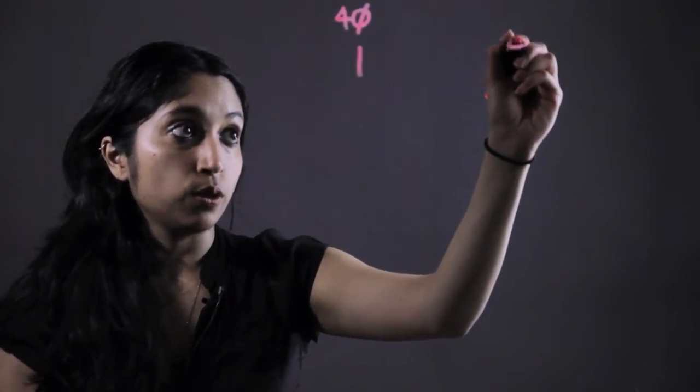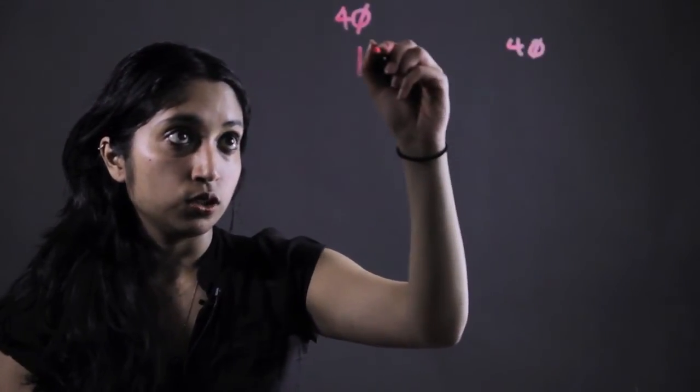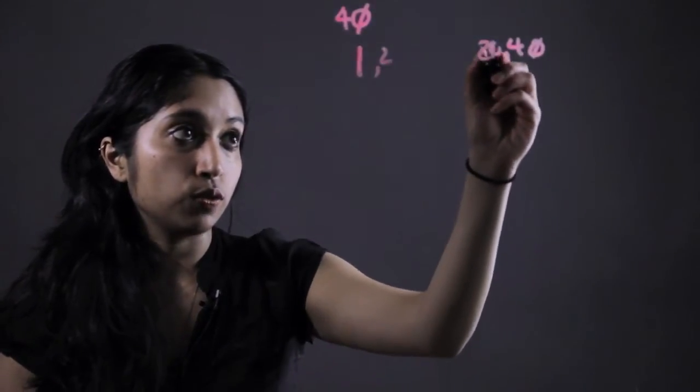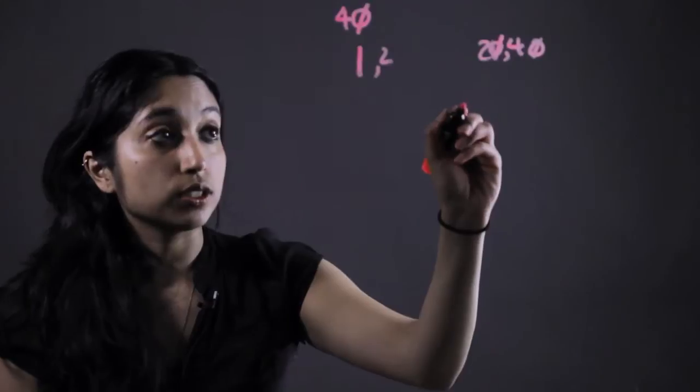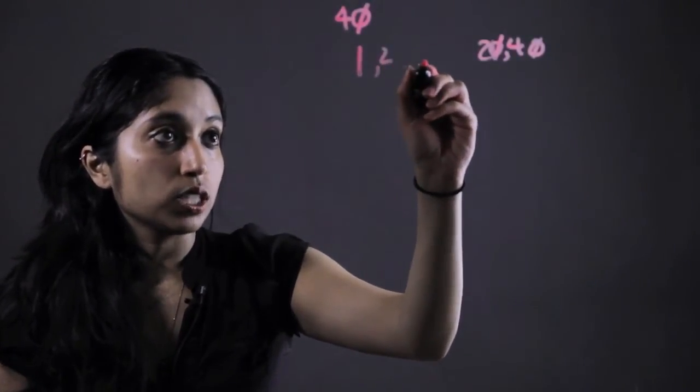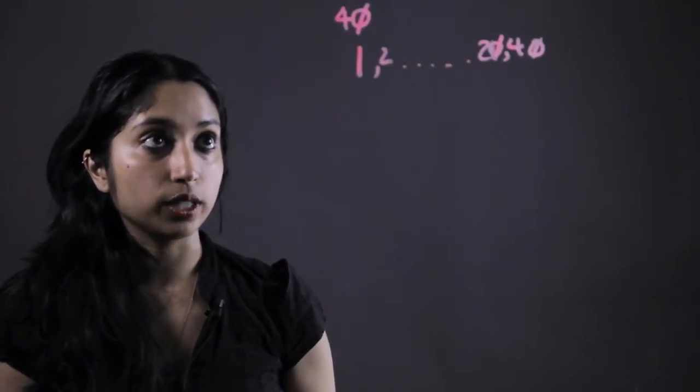Well 1 and 40, 2 and 20. These are all examples of factors because you can divide 40 by each of these numbers. You just keep filling these guys in to get all of the factors of 40.